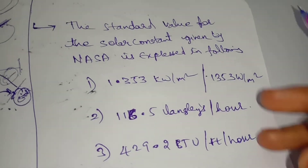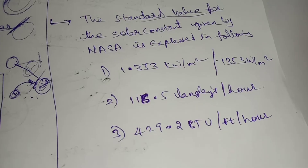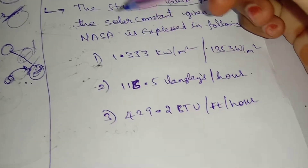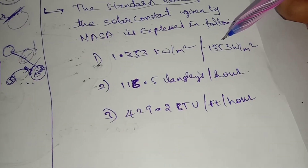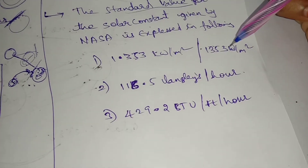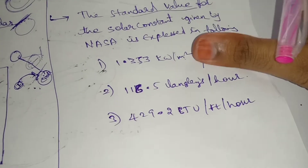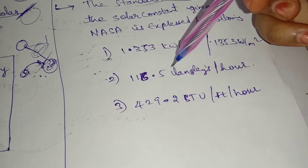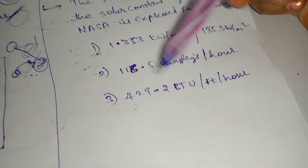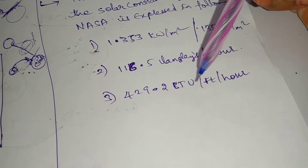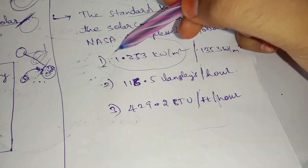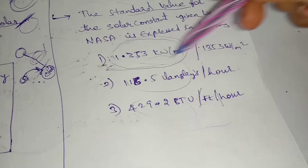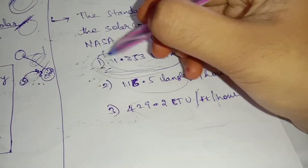The standard value for the solar constant given by NASA is 1.353 kilowatts per meter square. It can also be expressed as 429.2 BTU (British Thermal Units) per square foot per hour. This solar constant can be expressed in multiple ways.